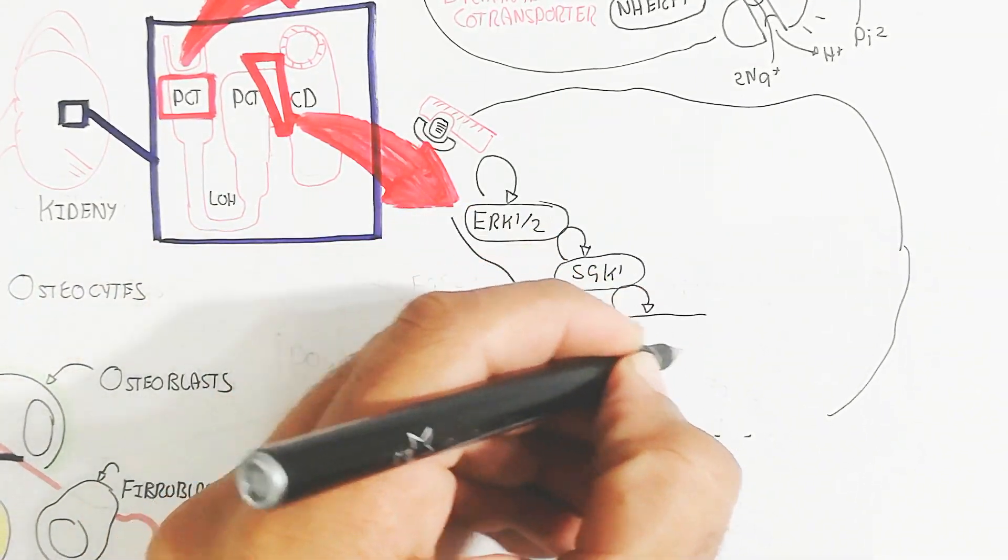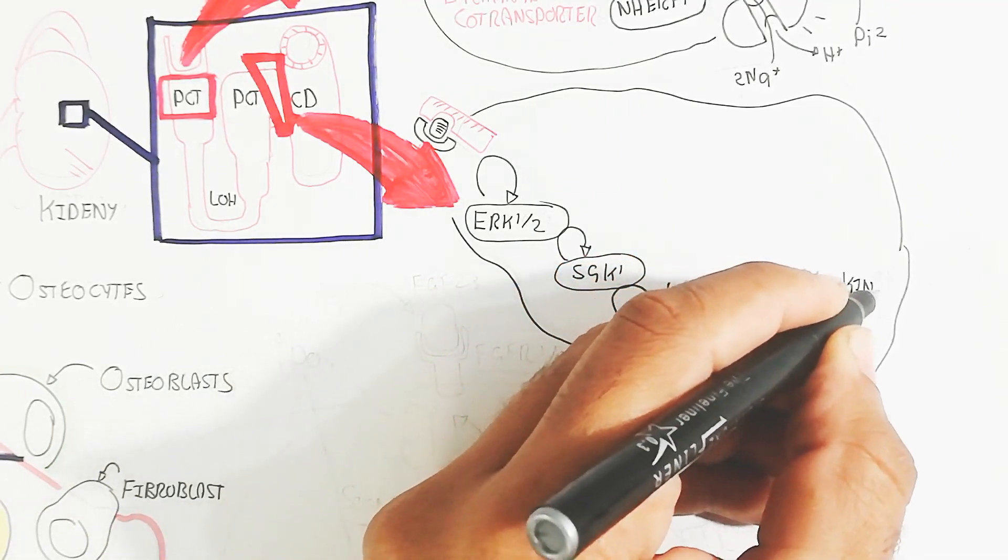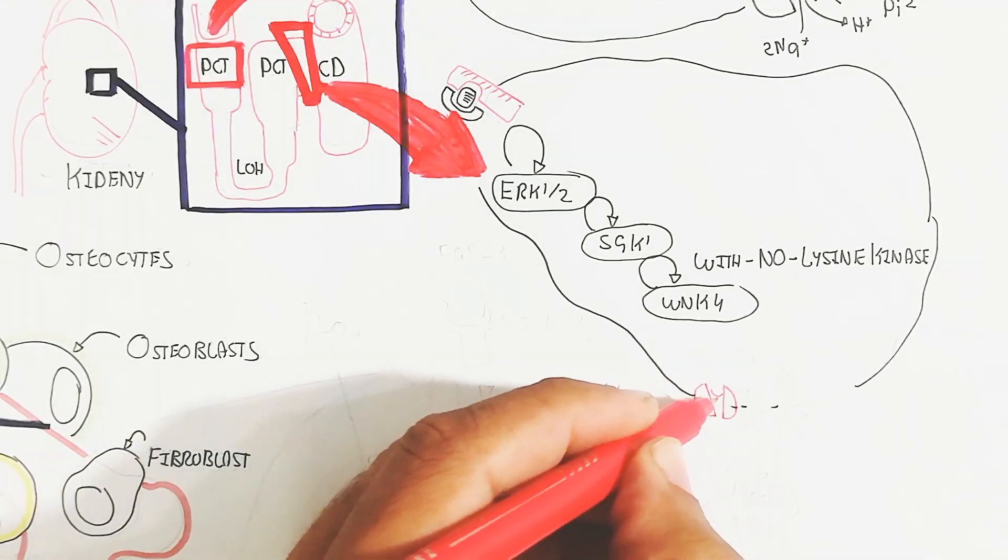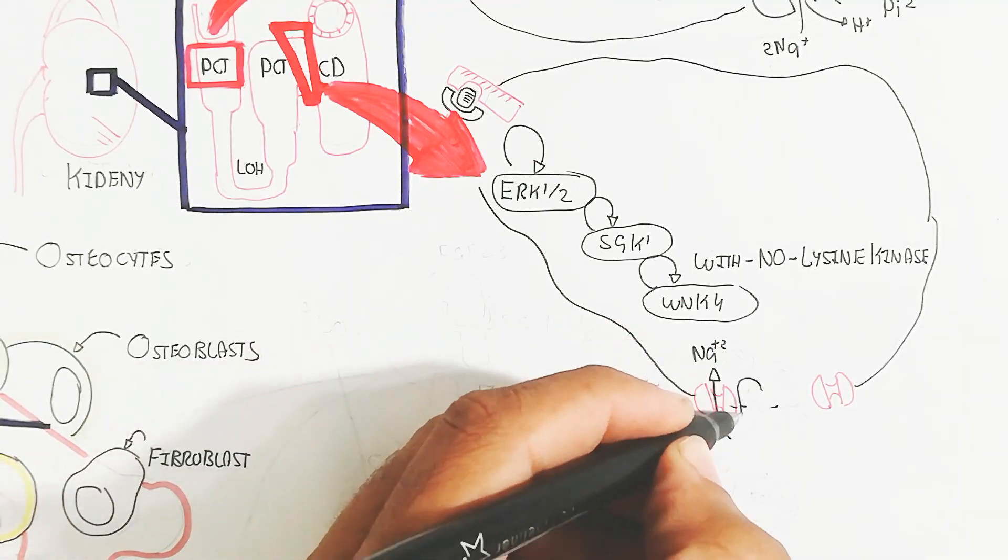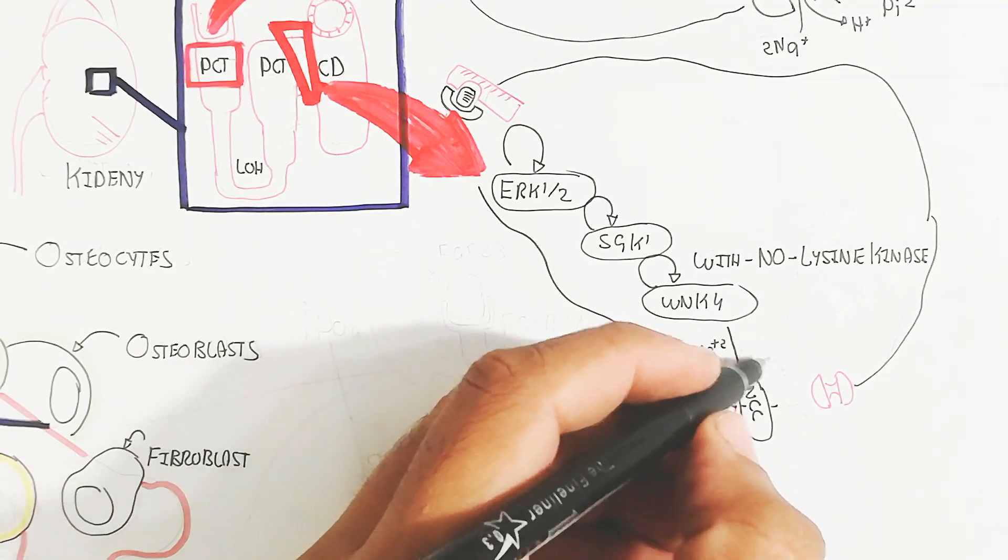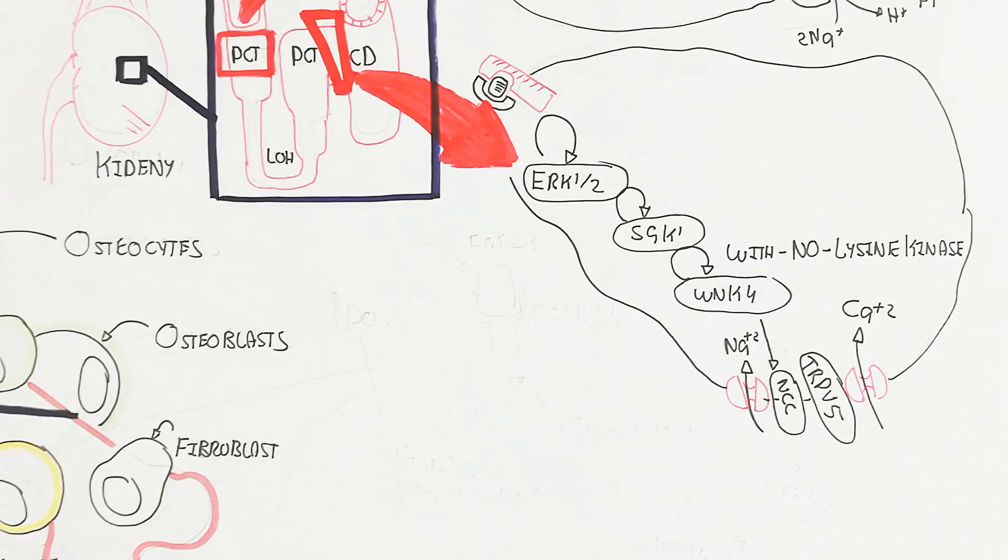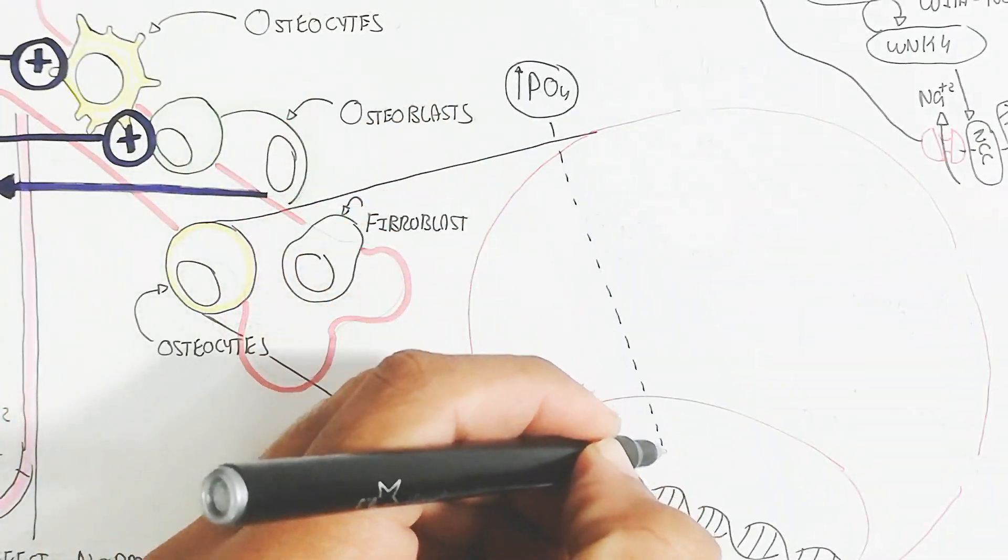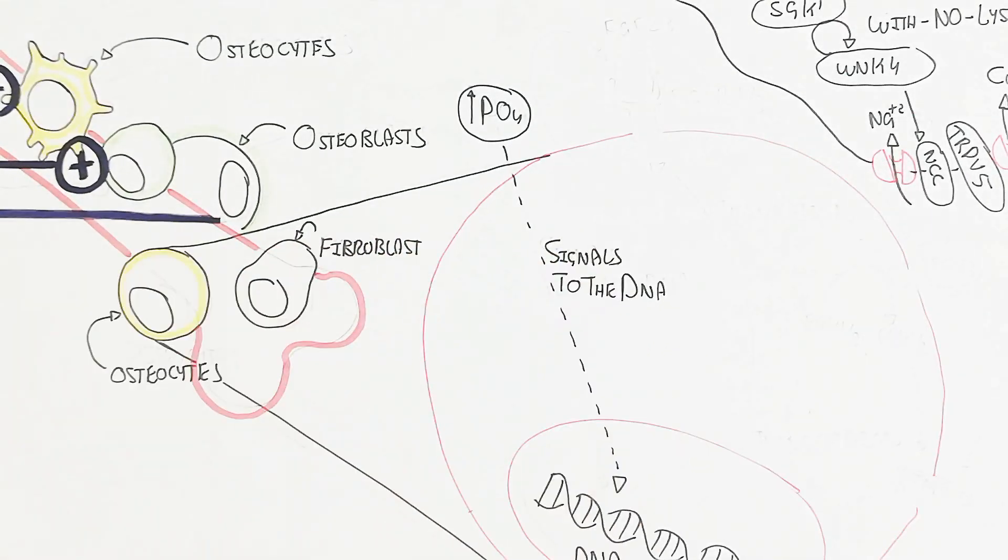Let's discuss about the distal convoluted tubule. It's the same mechanism, but the SGK1 will trigger the WNK4, with no lysine kinase, which will trigger the sodium channel and the TRPV5, which will inhibit the sodium uptake and calcium uptake. In this way, the calcium reabsorption is also inhibited.